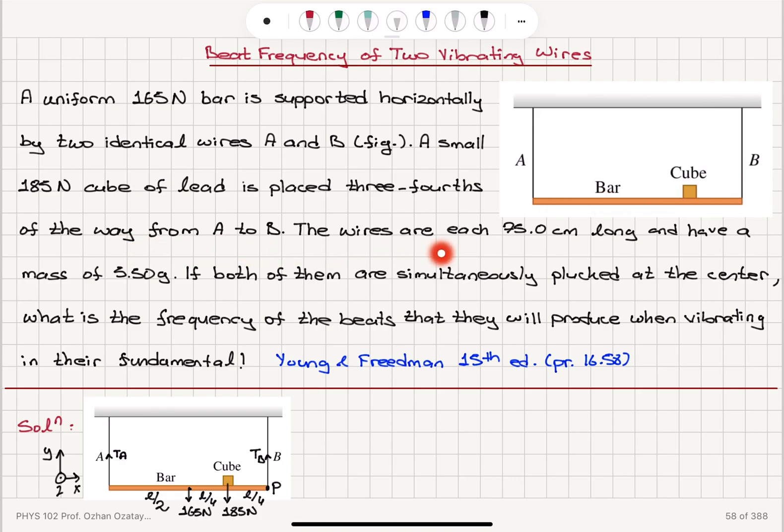The wires are each 75 centimeters long and have a mass of 5.5 grams. If both of them are simultaneously plucked at the center, what is the frequency of the beats that they will produce when vibrating in their fundamental?